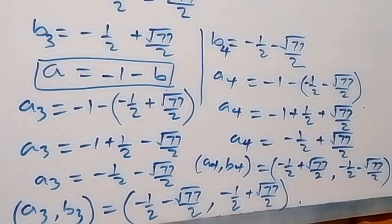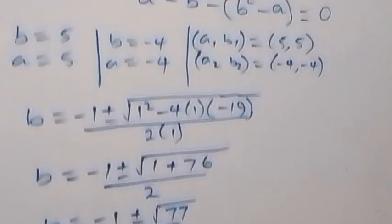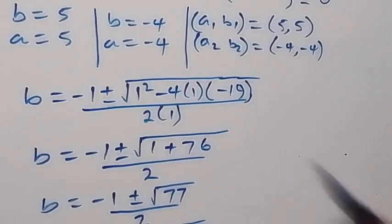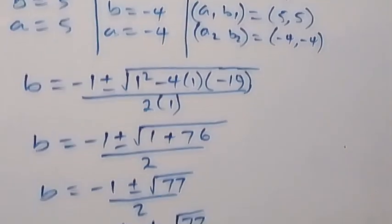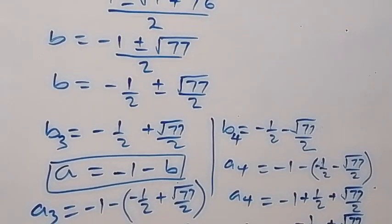Looking at solutions (a3, b3) and (a4, b4), we discover that what we have for a3 is the same as b4, and a4 is the same as b3 — so they are interchanged. We now have all the sets of solutions for a and b. Thank you for watching. Don't forget to subscribe to this channel, turn on the notification bell, share this video, give a thumbs up, and see you in the next class. Bye for now.